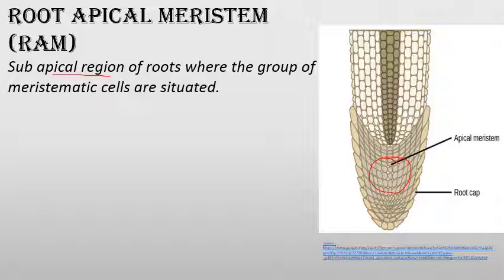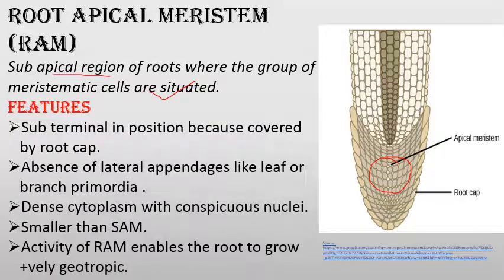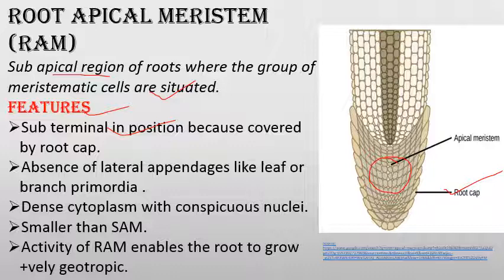Root apical meristem is a sub-apical region — below the apex — where the group of meristematic cells are situated, which have the power of cell division. It is in a sub-terminal position and is mostly covered by the root cap.